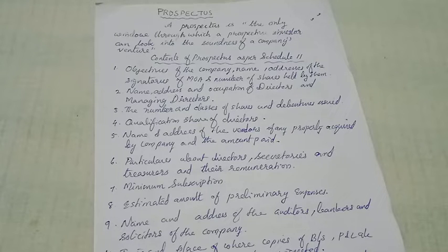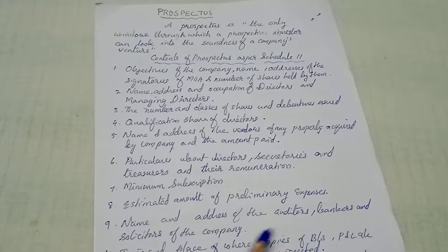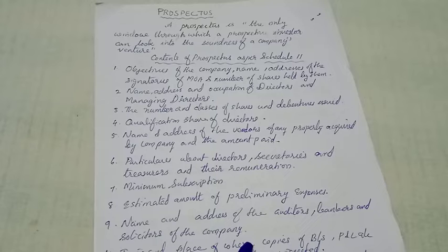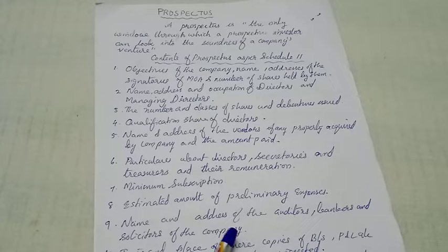Name and address of the auditor, banker, and solicitor of the company — the name and address of the banker, auditor, and solicitor must be included in the prospectus.